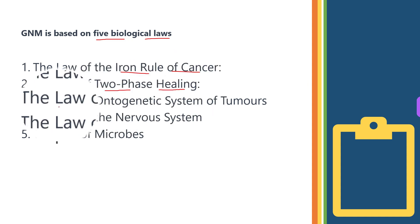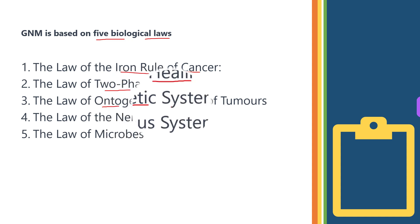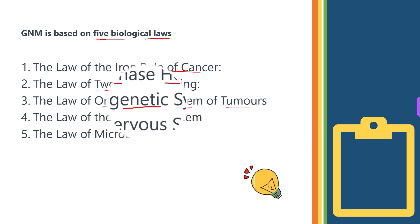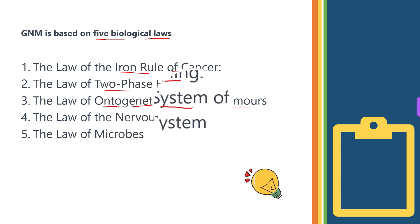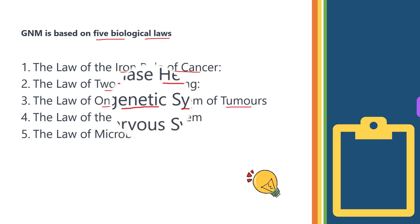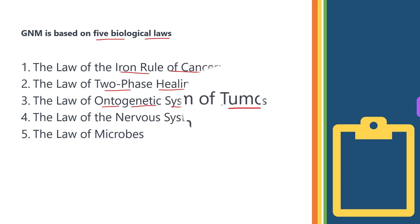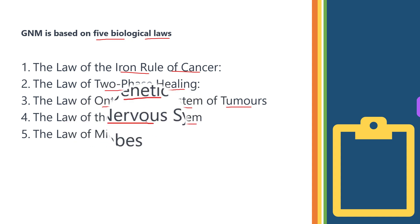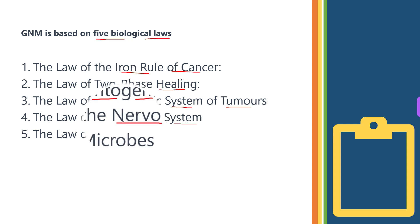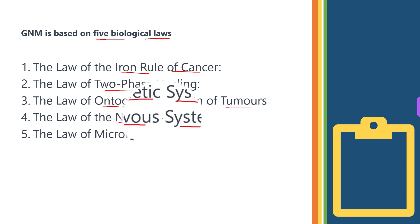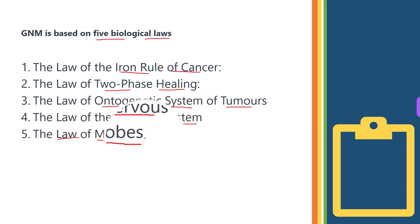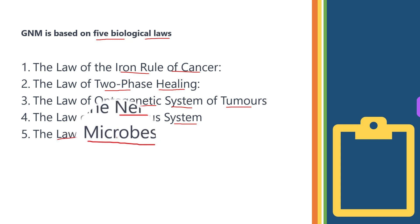The third law of GNM is the Law of Ontogenetic Systems of the Tumour. This law states that each type of cancer corresponds to a specific tissue of the body, and the development of tumours is related to the embryonic tissue of origin. The fourth law is the Law of the Nervous System, which states that all symptoms and diseases are caused by the brain, which controls the body's organs and tissues through the nervous system. The fifth law is the Law of Microbes, which states that microbes such as bacteria and viruses are not the cause of diseases, but are attracted to diseased tissues as part of the healing process.